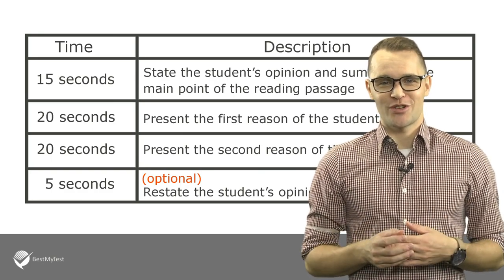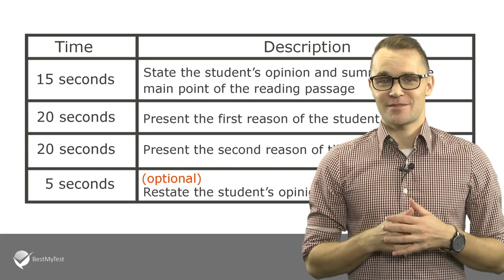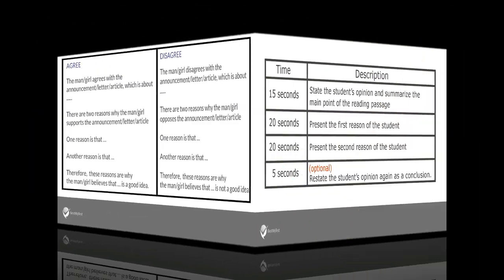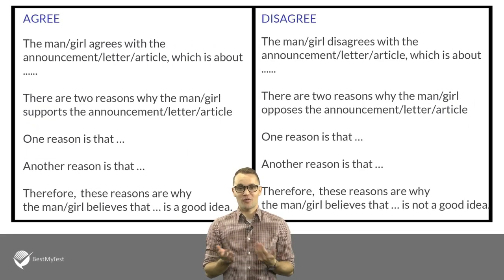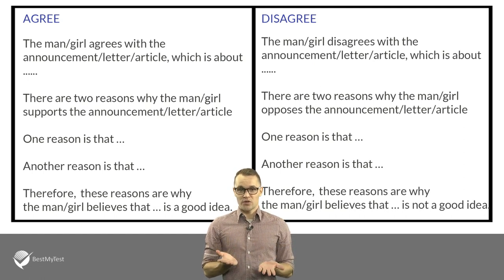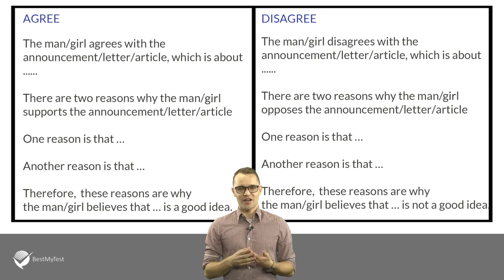We all want you to get a high score and we want you to prepare for this task more easily. That's why we, from BestMyTest, provide you with an answer template, so you can use it as guidance when you give your speaking response. Here's the template. It starts with 'the man or woman agrees or disagrees with the announcement which is about.' Then you say 'there are two reasons why the man or woman supports or opposes the announcement.' You use 'one reason is' to begin talking about the student's first reason, and 'another reason is' to begin talking about the student's second reason. Finally, you use 'therefore' to give a conclusion. So let's try using this template.